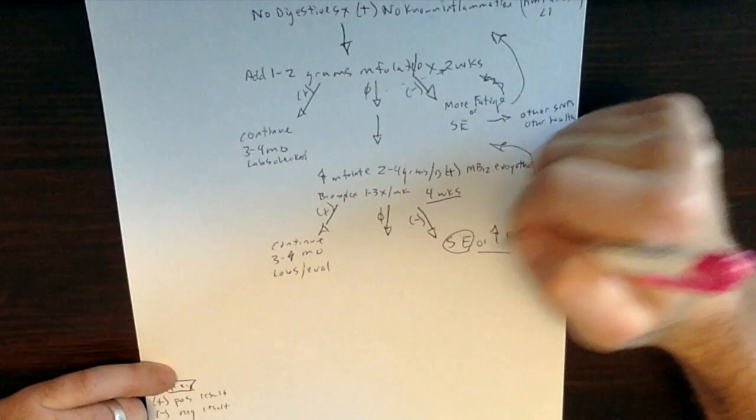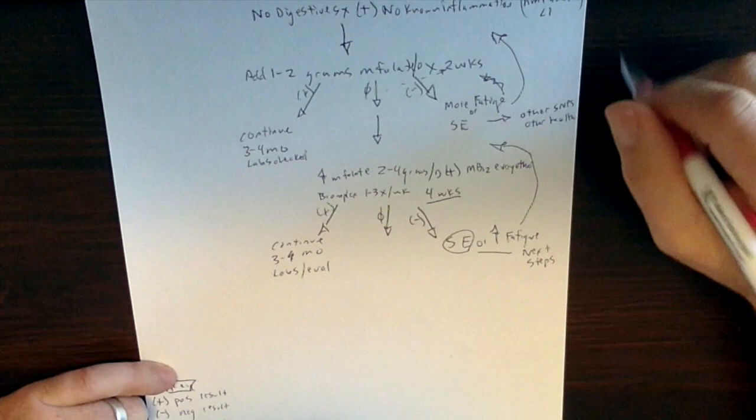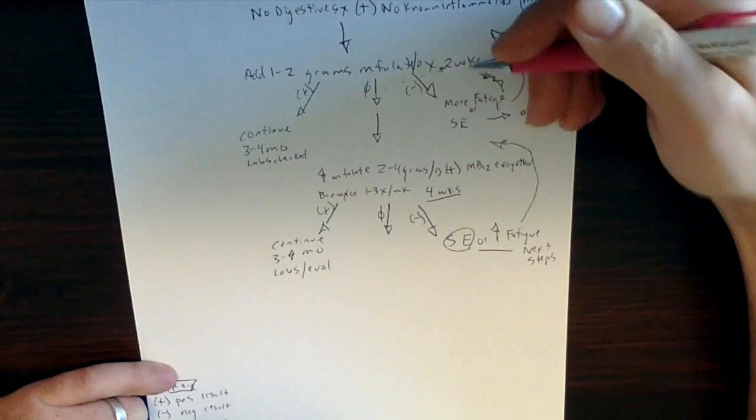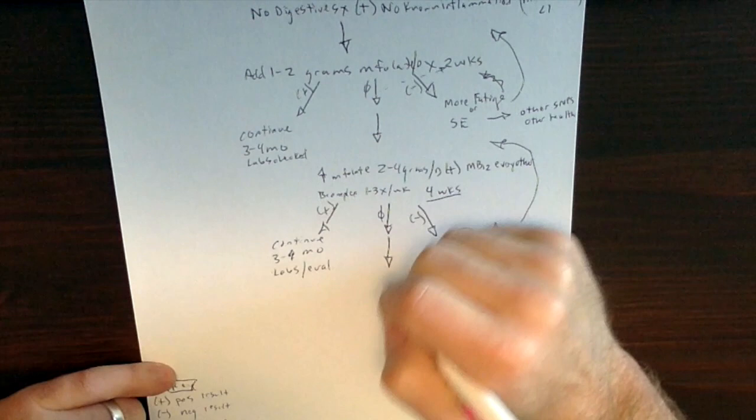You know, so if you got more fatigue, that's sort of telling you something. If you got body aches, that's sort of hinting at something. If you got headaches, that's hinting at something too. So I'm not going to get into that here and try to simplify the algorithm, but all that info will be in the course. But this sort of gives you a general idea of the flow of how you should be thinking about things, the weeks, the duration of things, et cetera.